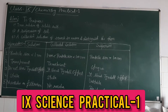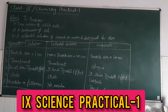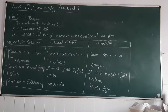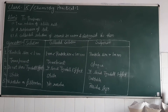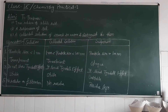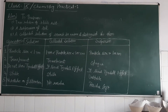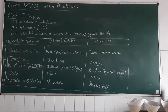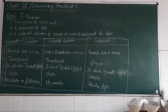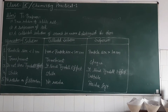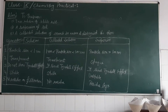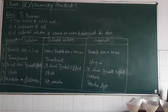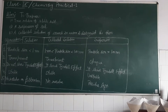Good morning students. Today we are going to perform the first experiment of chemistry for Class 9th. We will talk about Chapter 2: Matter Around Us Pure. We have studied about the various types of mixtures in the chapter. The theory part we have covered during the chapter and today we are going to perform the experiment, as you can see written on the board.